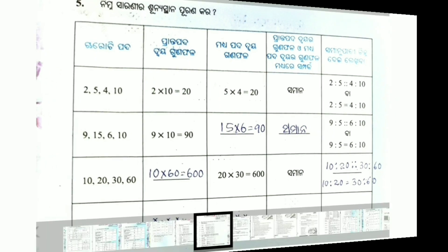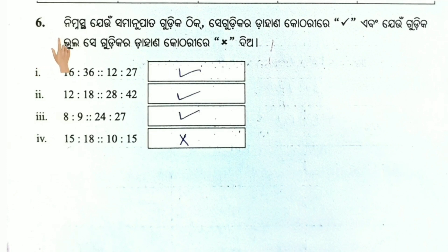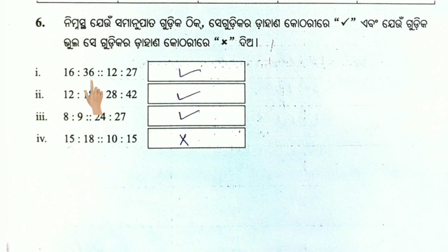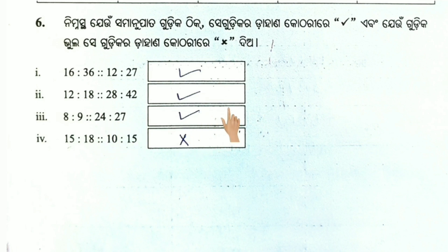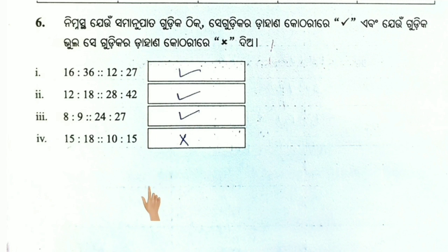Then we move on to number 6. We will put up 6 to 37. Then we will check: 8 to 9 is equal to 24 is to 27. 8 is equal to 8. 15 to 18 is equal to 10 is to 15. 8 is equal to 10.